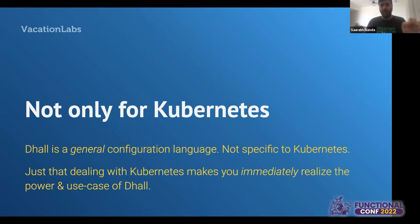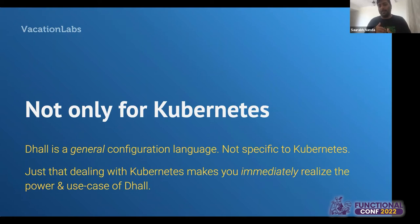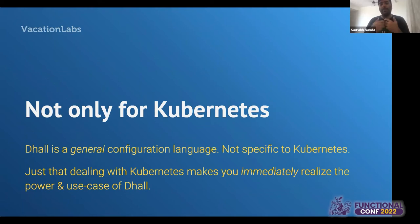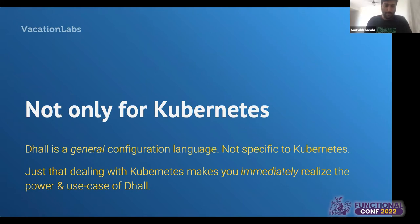You should not walk away from this talk saying you'll only use Dhall when using Kubernetes. But it's the thing that makes you immediately realize Dhall's power. If you're in a mid-size to large company where you've moved your infra to the cloud and are doing infrastructure as code, even without Kubernetes, you're probably dealing with a configuration explosion. There is better tooling and better developer experience available for managing these config files, which are critical for deployments these days.